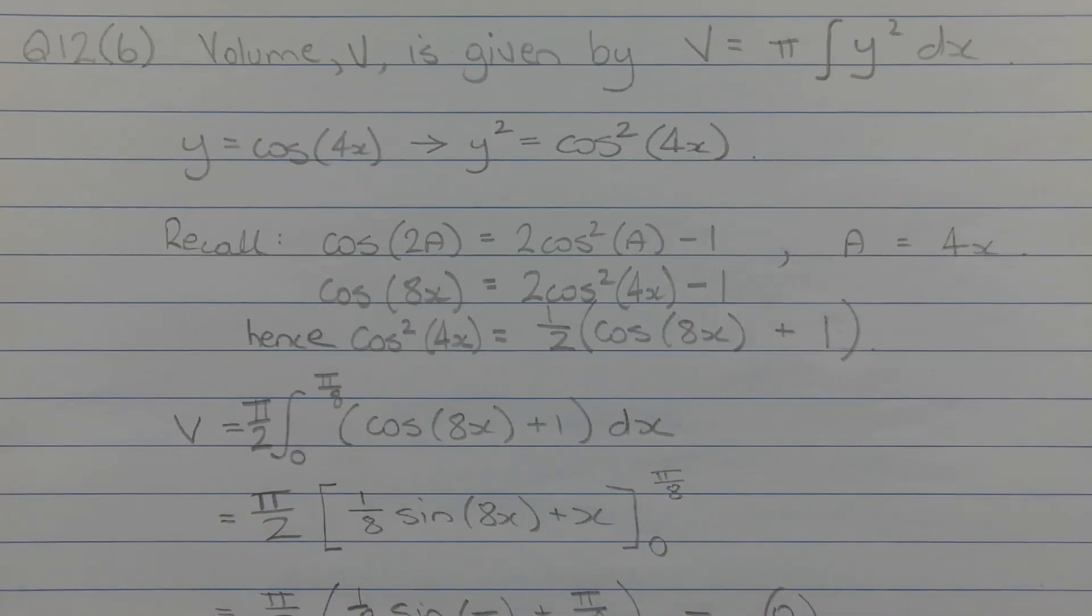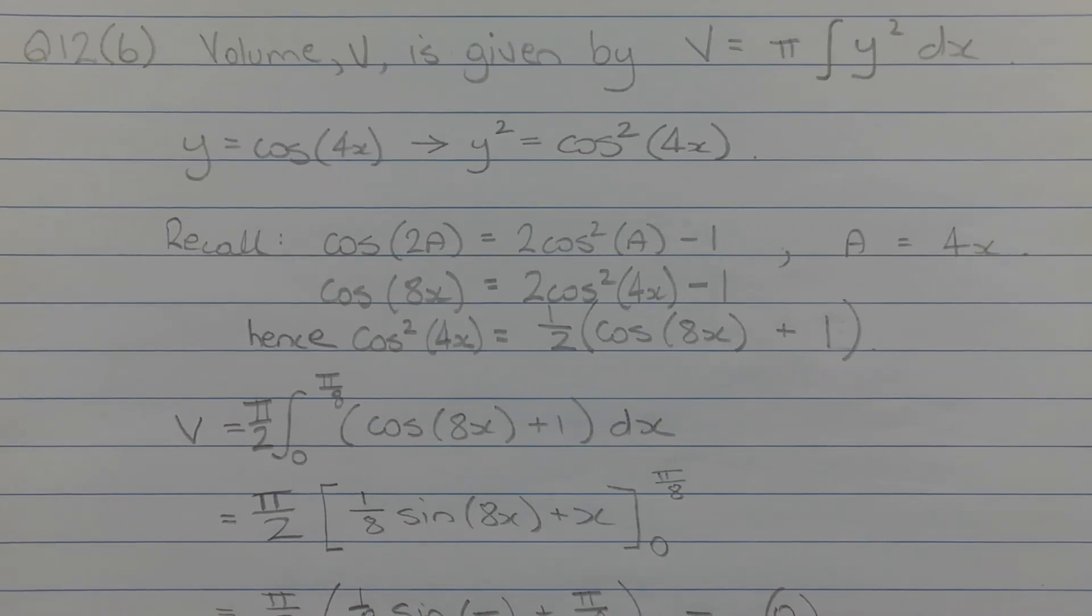Now in order to integrate cos squared 4x, we'll need to change the form of the integrand into a form that's more easily integrable. So we can change cos squared 4x into another form using a double angle trigonometric identity.